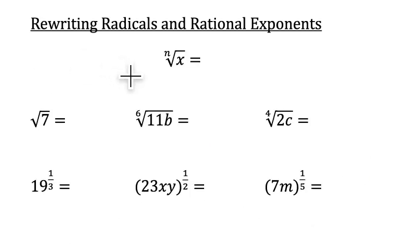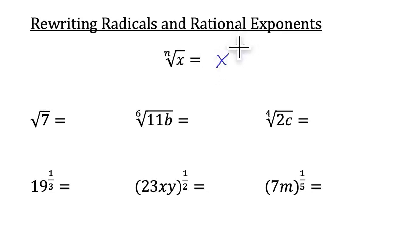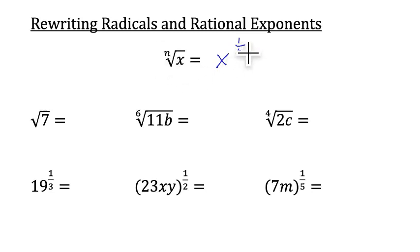It turns out there's another way to write radical expressions, and that's using rational exponents, or exponents that look like fractions. The nth root of x can be written as x to the 1 over n power. Notice that the root is in the denominator of the fraction, so this is called a rational exponent because it looks like a fraction.